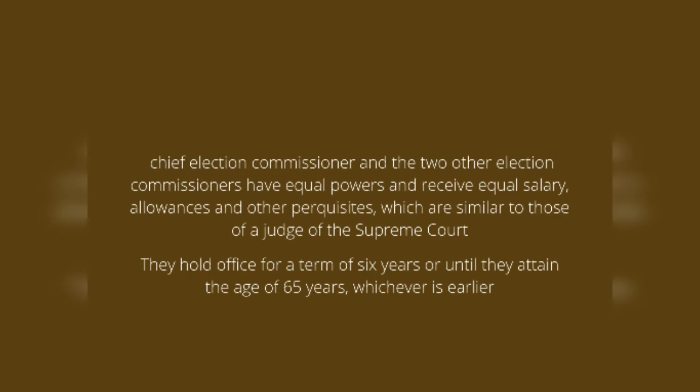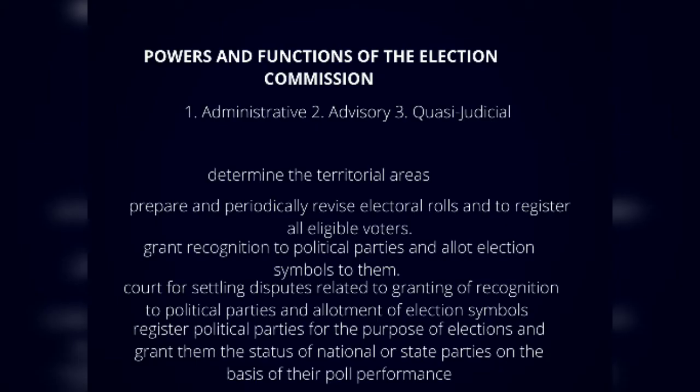The tenure is six years or up to 65 years of age, whichever is earlier. The Election Commission has three powers: administrative, advisory, and quasi-judicial. Administrative functions include territorial determination and delimitation through the Delimitation Commission. Advisory and quasi-judicial functions include political party symbol registration and settling related disputes.